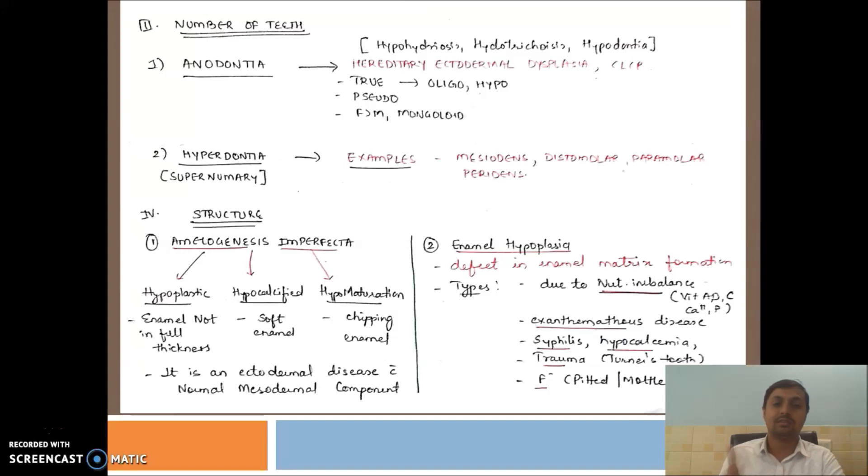Anodontia is also seen in case of CLP. Most commonly, anodontia is seen in the case of lateral incisor.